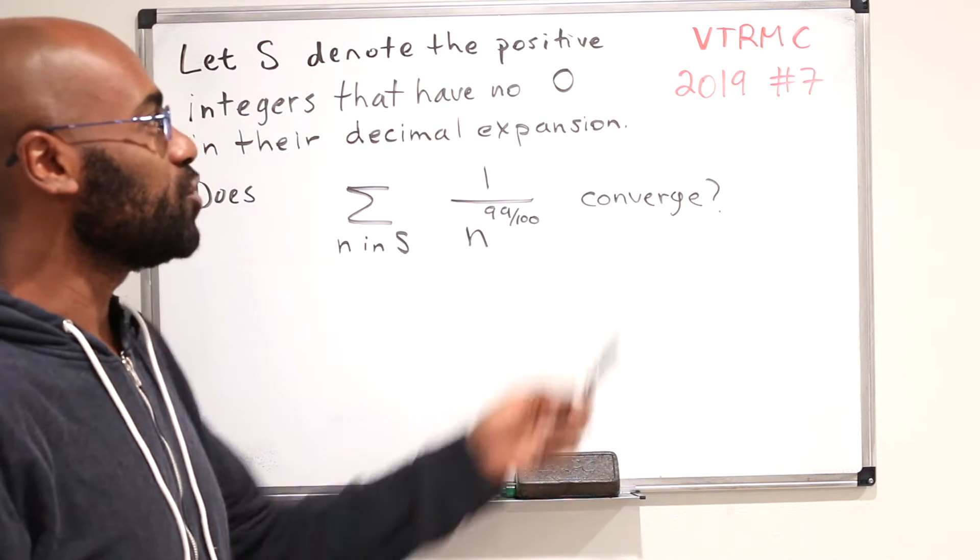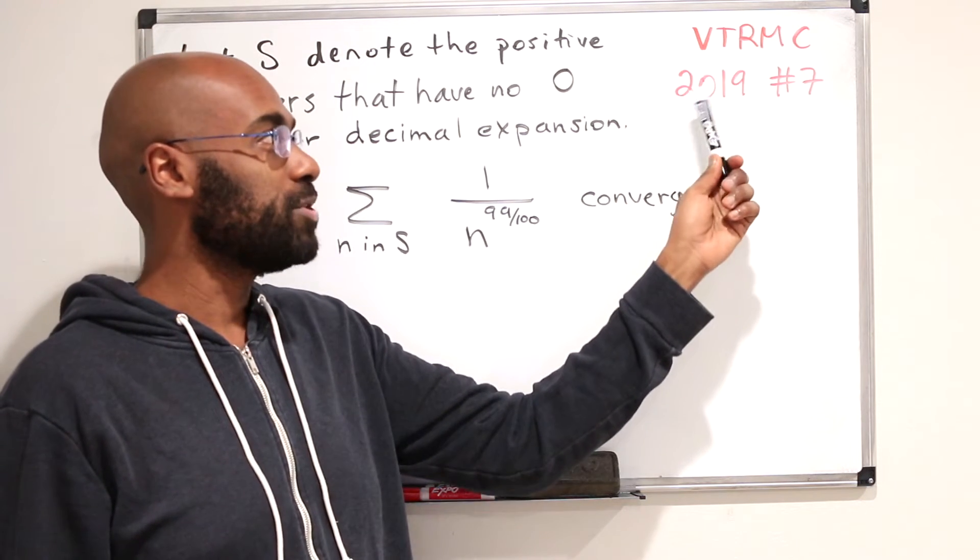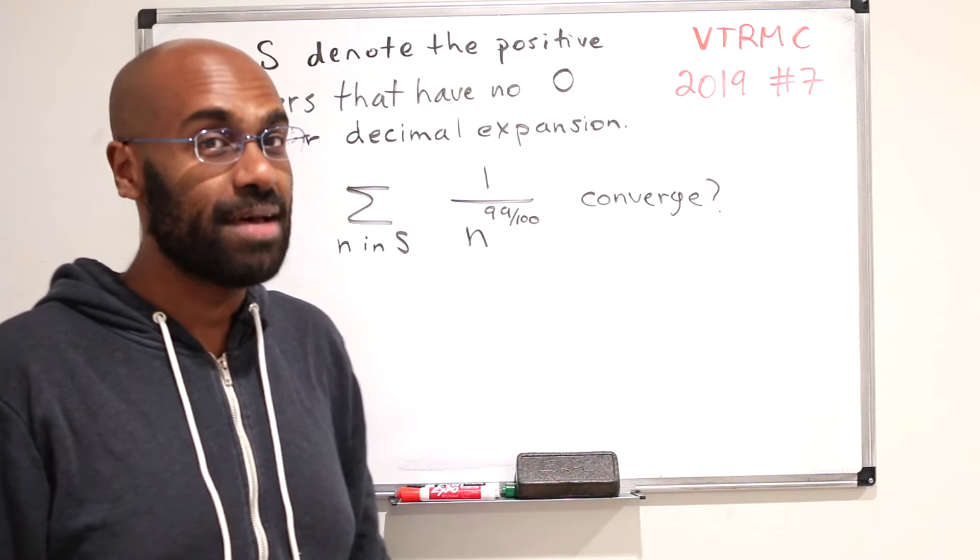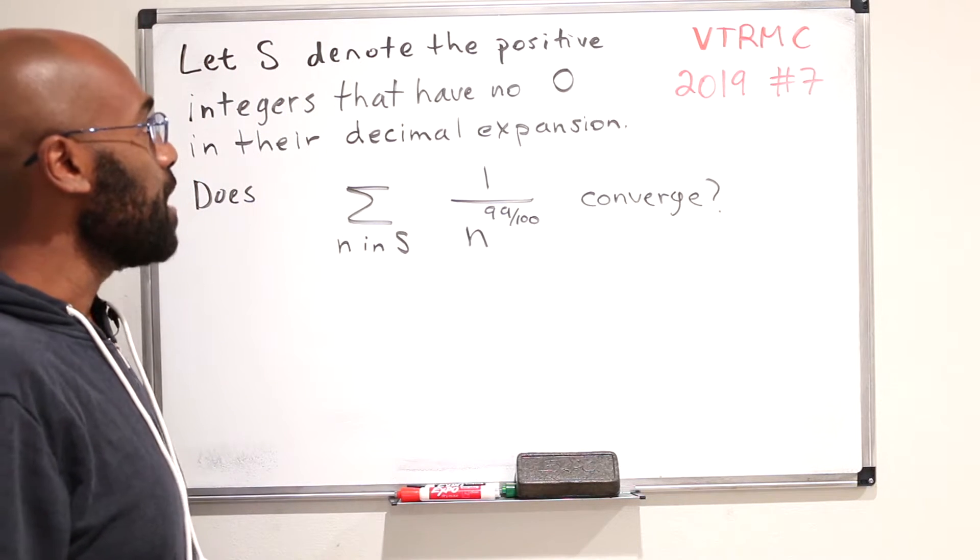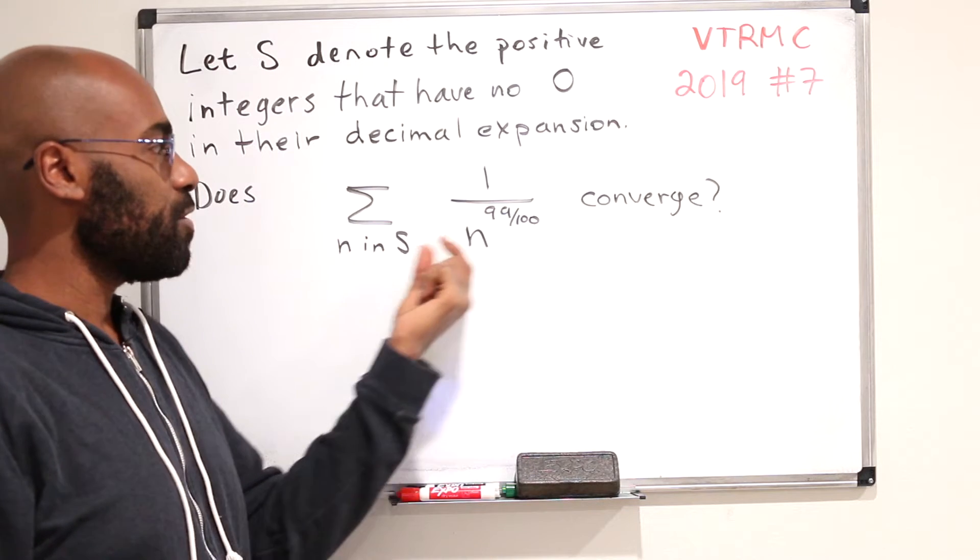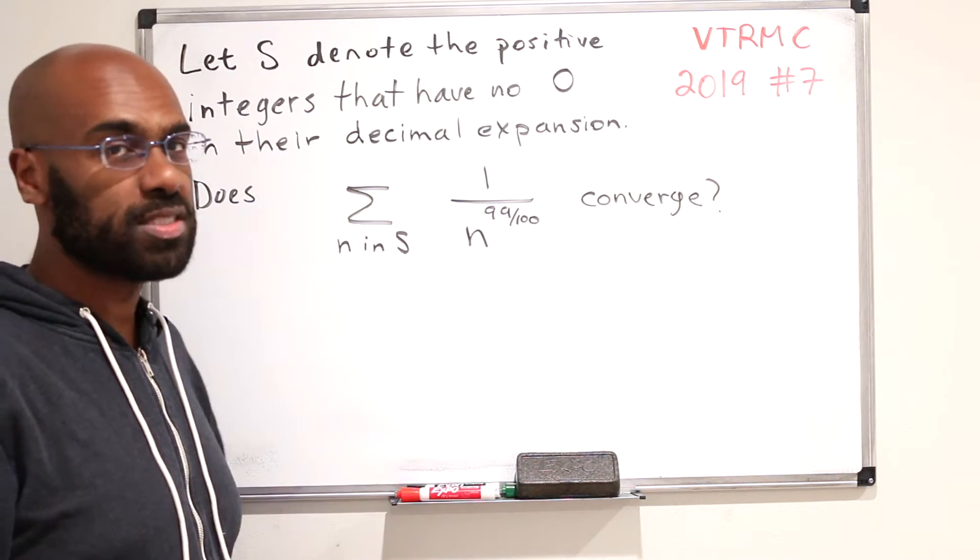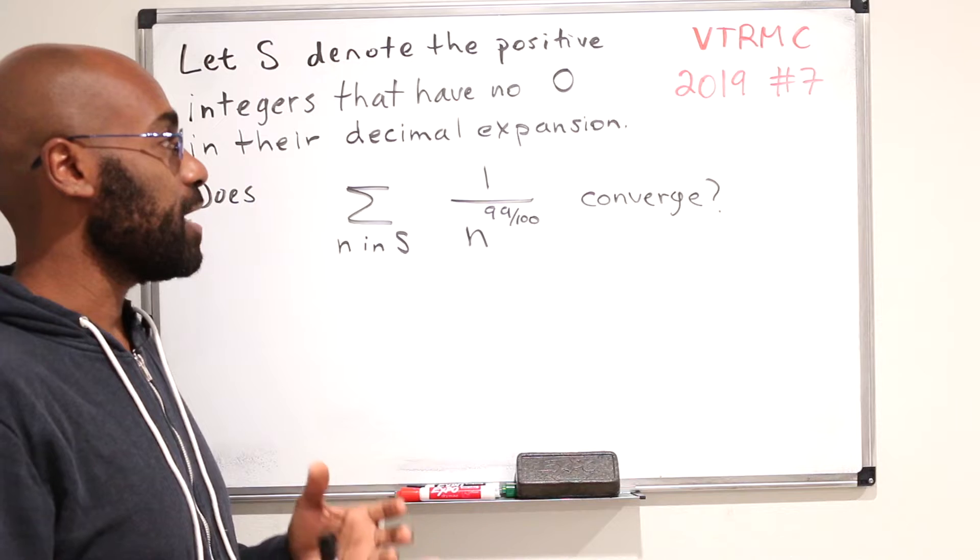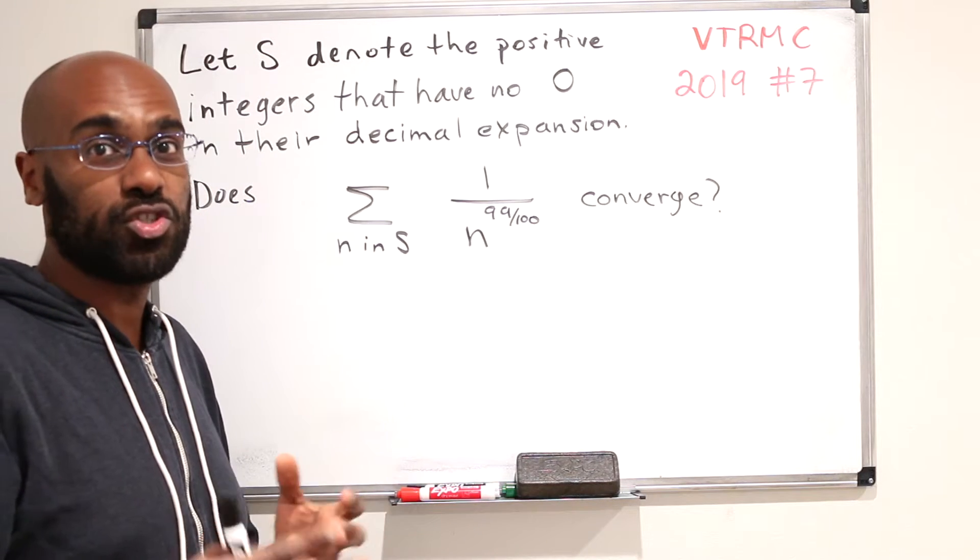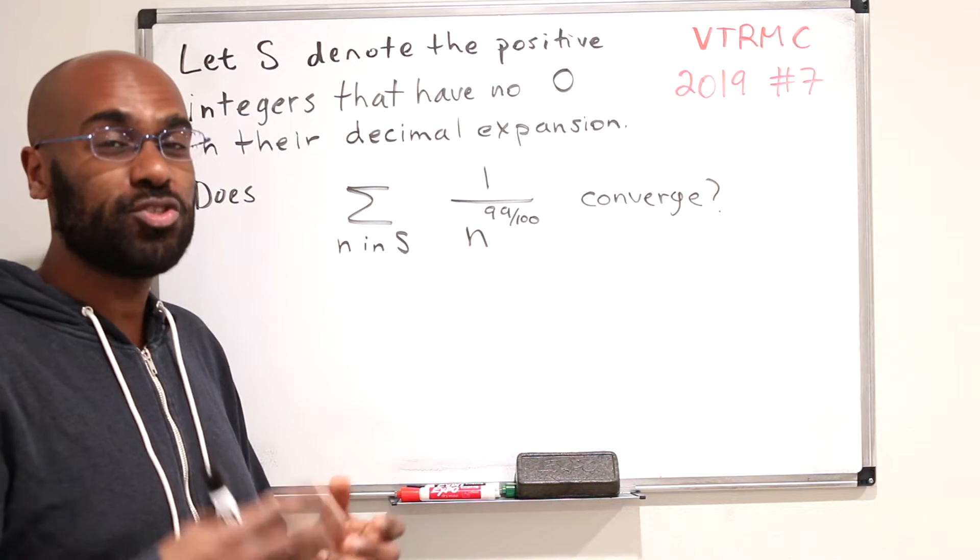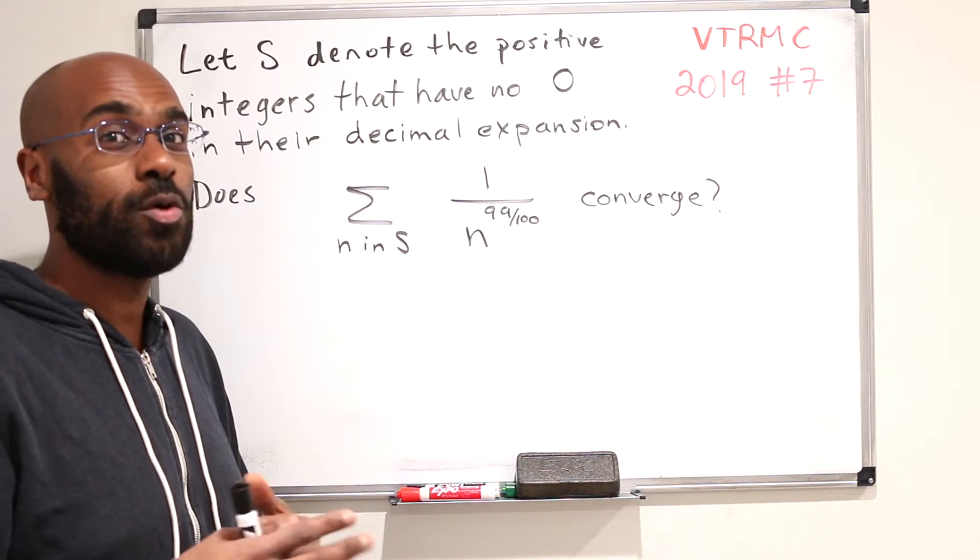In this video, we're going to explore Virginia Tech Regional Math Competition 2019 number 7. This is an undergraduate mathematics problem about whether or not a particular series converges. I think it's a great problem for playing around with the ideas of convergence and how you can establish whether a series converges or not. Stay tuned for an interesting problem with an interesting follow-up as well.